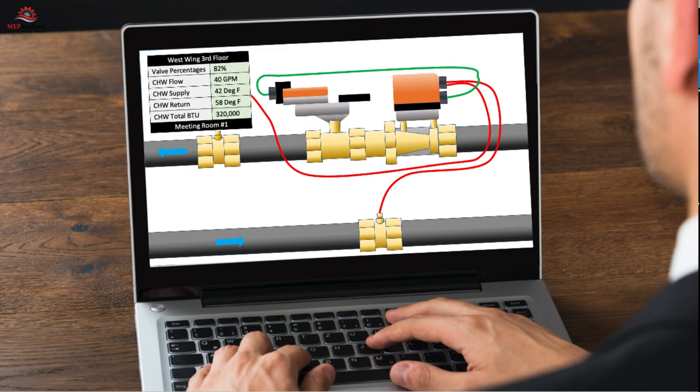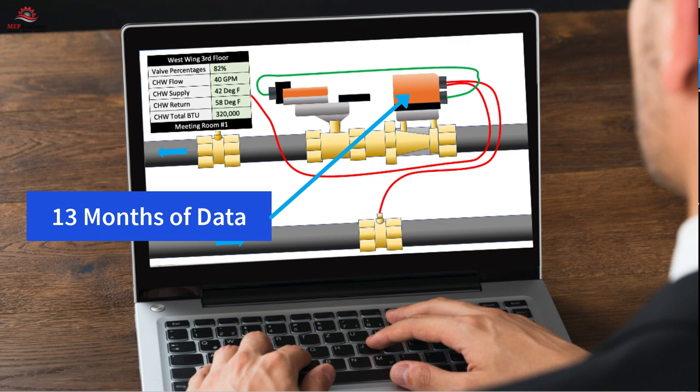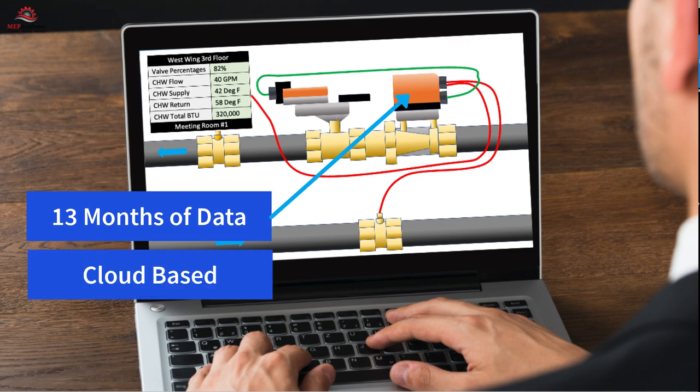Building management system integration. The energy valve has the capability to connect using Modbus and BACnet protocols, in addition to the capability to connect securely to the internet. This allows for monitoring of temperatures and flows, which can be used to bill tenants for energy consumption. The energy valve logs the energy consumption for up to 13 months on the valve, or for indefinitely when connected to the cloud.